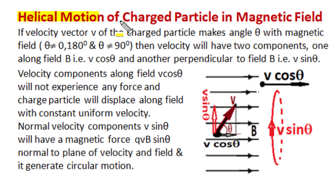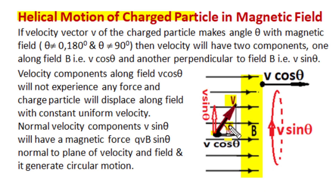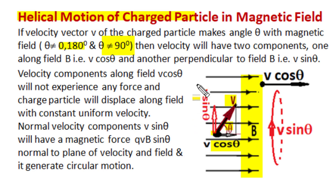First, understand why and how helical motion of a charge particle takes place in a uniform magnetic field. If for a charge particle the velocity vector v makes an angle theta with uniform magnetic field flux density, and this angle theta is not 0, nor 180, nor 90 degrees, then the particle velocity can be resolved into two components: one component v cos theta along the magnetic field flux density, and a second component v sin theta making an angle of 90 degrees with the magnetic field flux density.